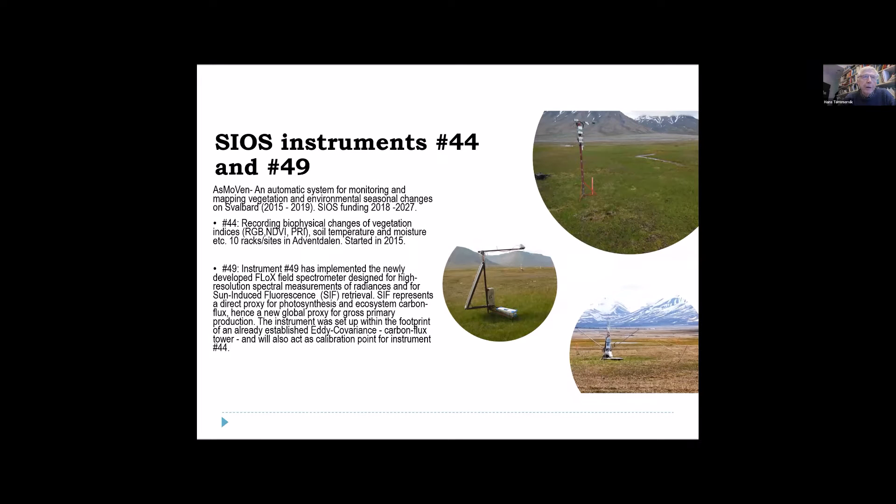The first instrument is number 44, a remote sensing system standing out in Adventdalen on ten ITEX sites. But I will concentrate my presentation here about the instrument number 49, which is a field spectrometer that surveyed the monitoring vegetation during the growing season and has been standing there for three years now.